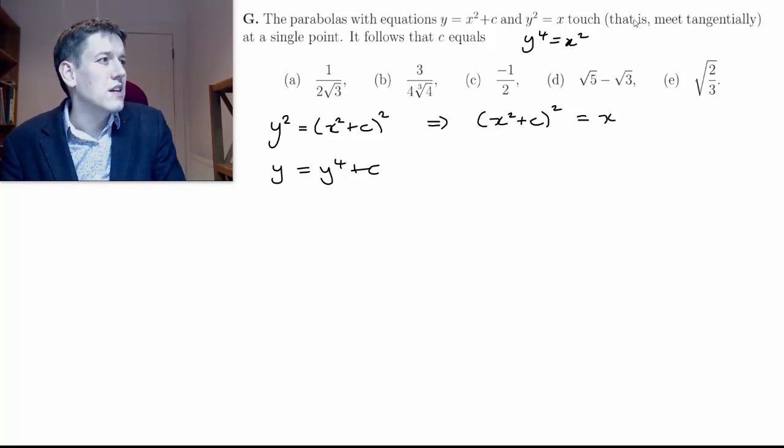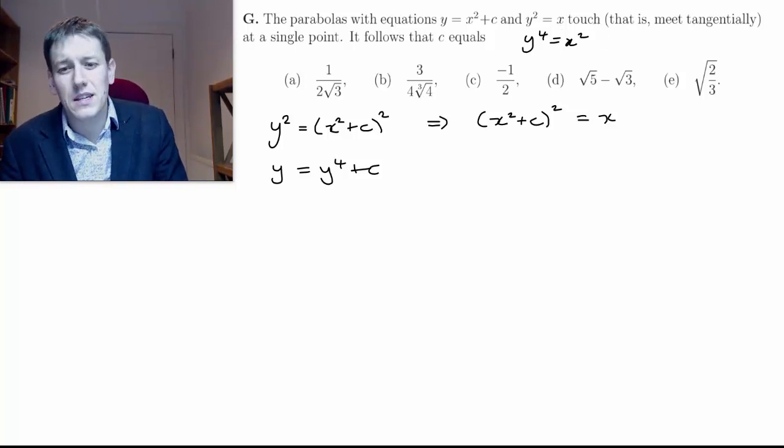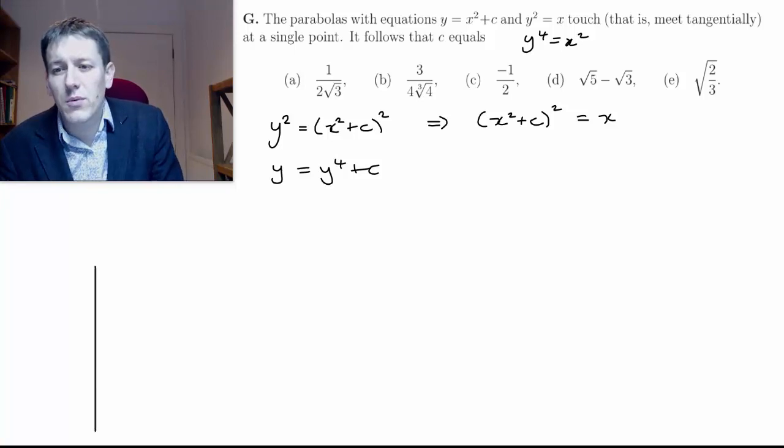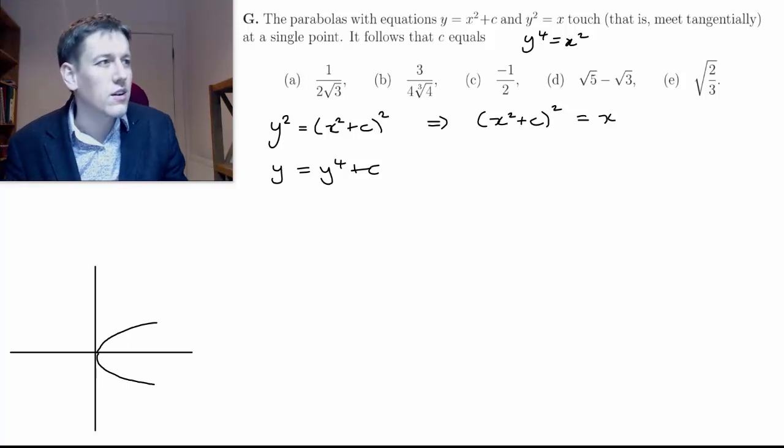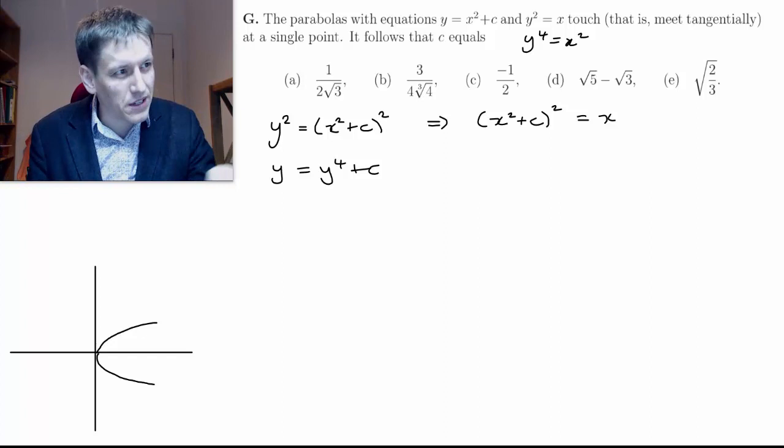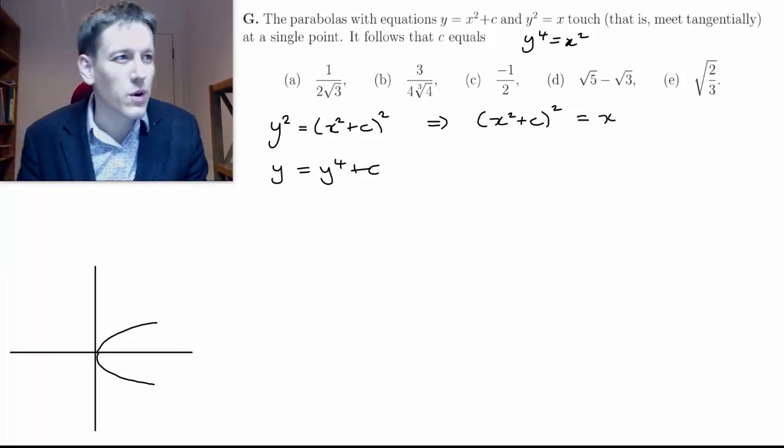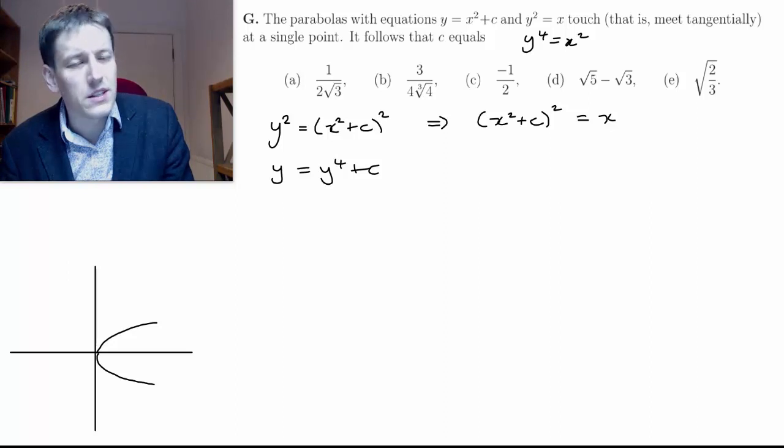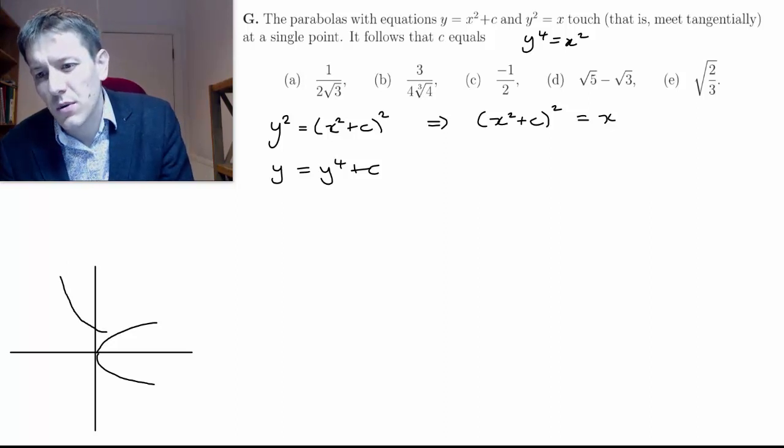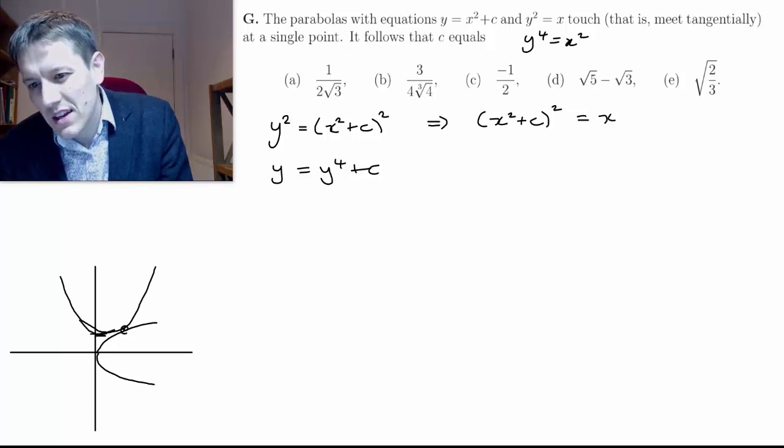But there's a clue in the question that says they touch—that is, they meet tangentially. If you think about what these curves are going to look like, we've got y² = x, which you should be able to recognize as the parabola but the other way around from how we usually draw y = x². It's with the roles of x and y reversed. And y = x² + c, that's just y = x² but shifted up the page by the constant, so it's going to be some point here with its minimum at c.